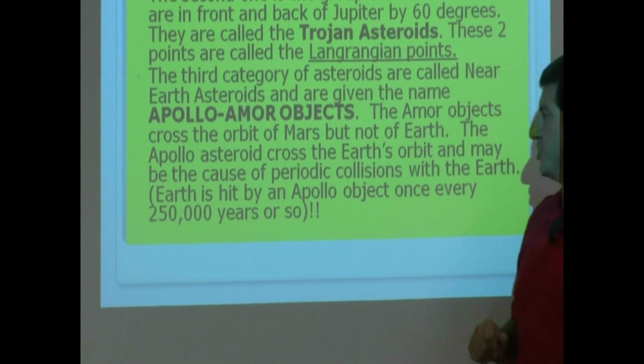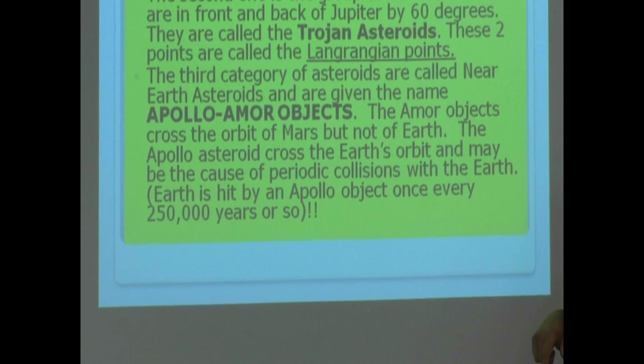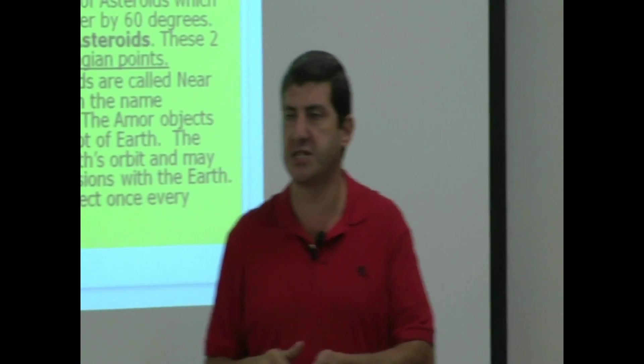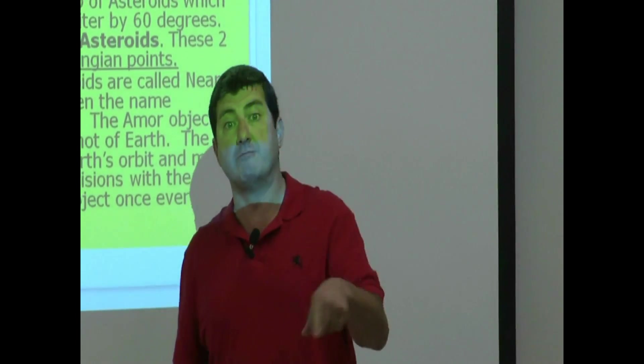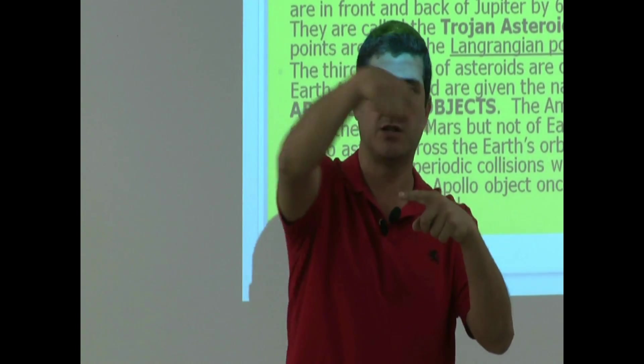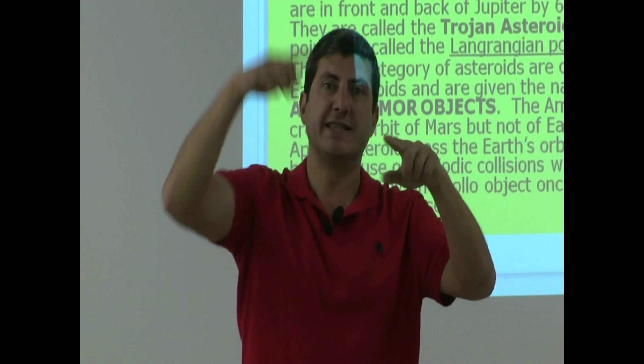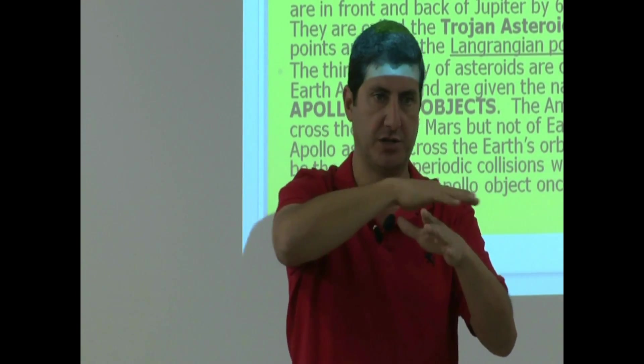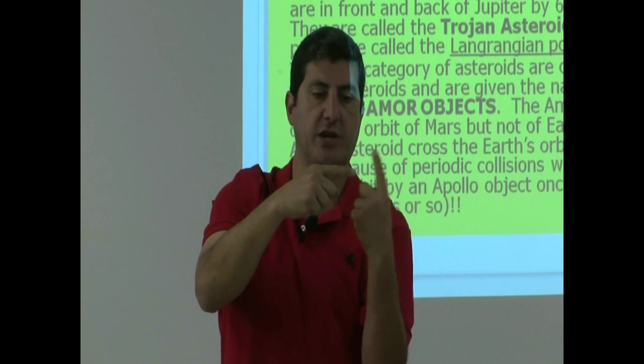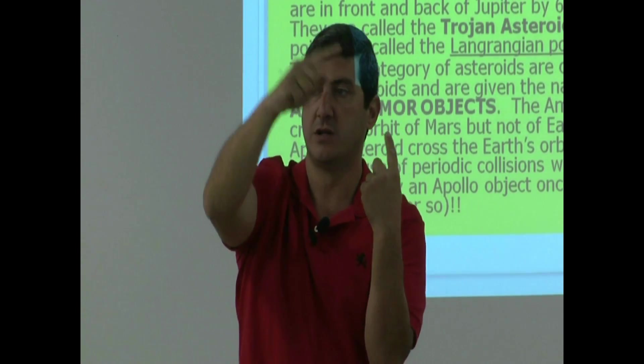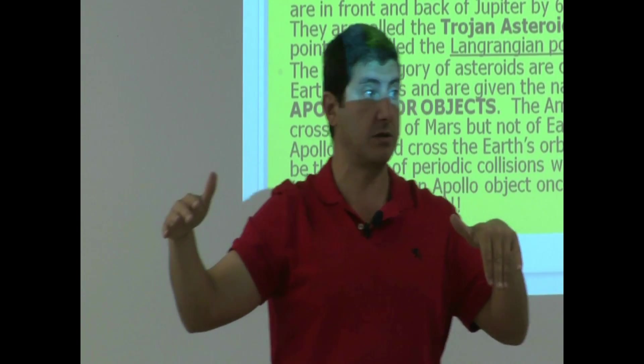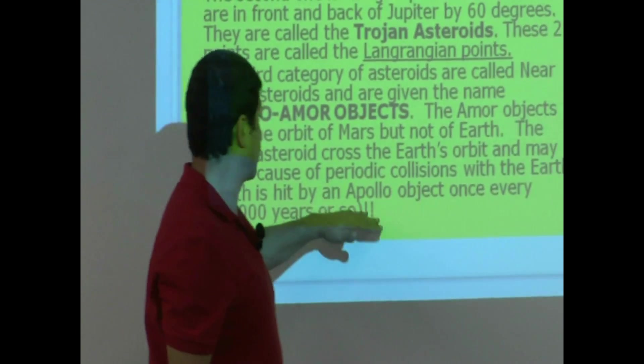It says, roughly on the average, Earth is hit by an Apollo object once every 250,000 years or so. I mean, it's not that often, but it's still often enough to cause us damage. The reason they don't hit us even more often is because the orbit of the asteroids, like if this is the orbit of the Earth, the orbit of the asteroids is not in the same plane as the Earth's.